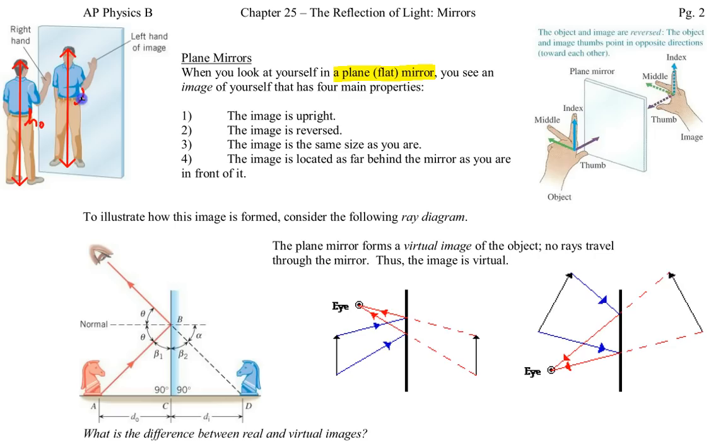And lastly, the distance between you and the mirror, this distance here we'll call the object distance, d_o or s_o, is the same as the distance between the image and the mirror, which I'll label d_i for image distance.